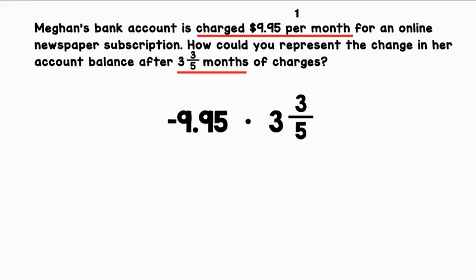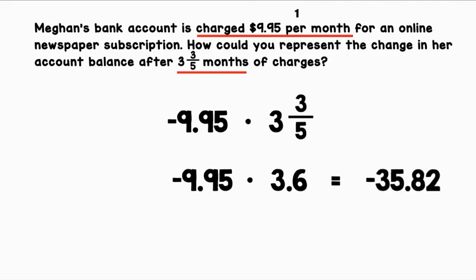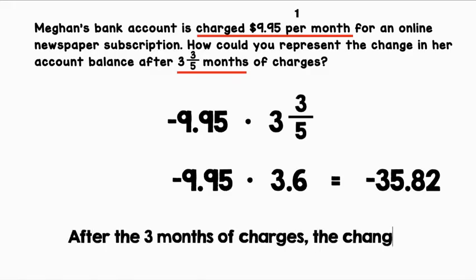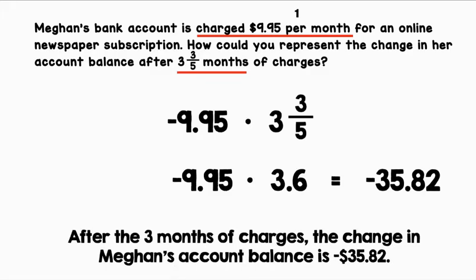We have one decimal and one mixed number, so let's convert that mixed number to a decimal as well. We have negative 9.95 times 3.6 — where 3 is a whole number and 3 divided by 5 is 0.6. When we multiply these two numbers together, we get negative 35.82. After 3 and 3/5 months of charges, the change in Megan's account balance is negative $35.82.